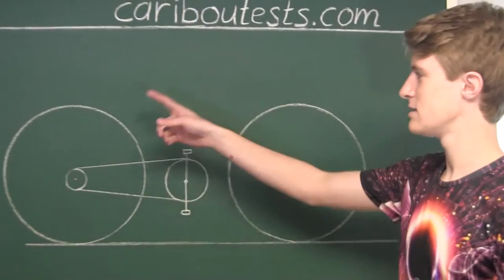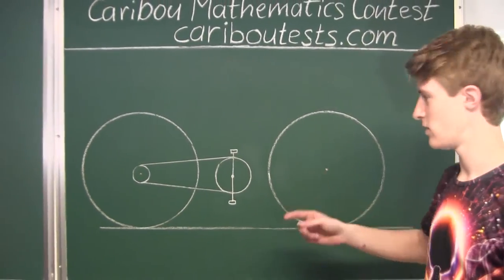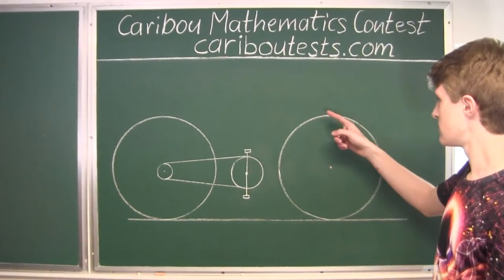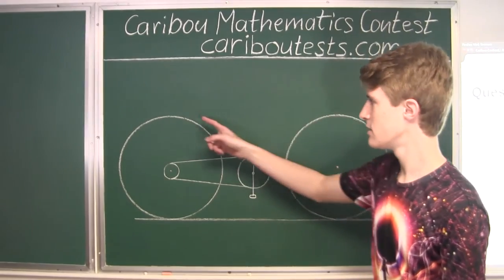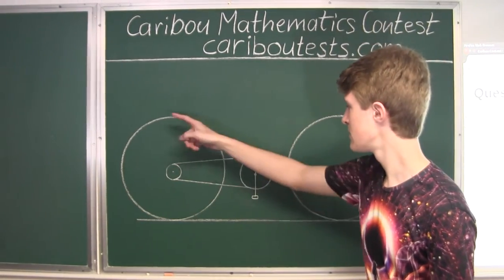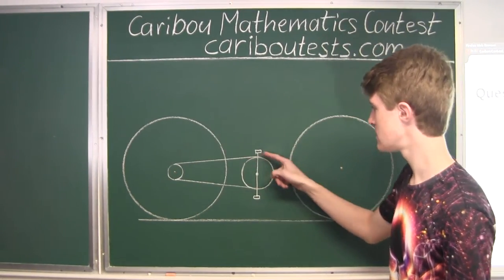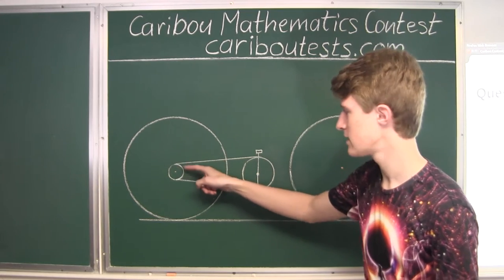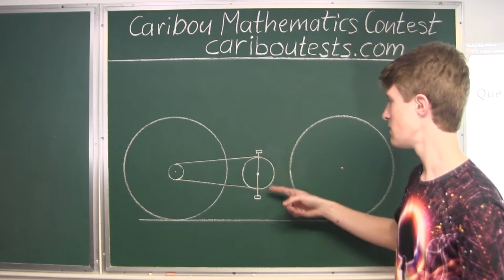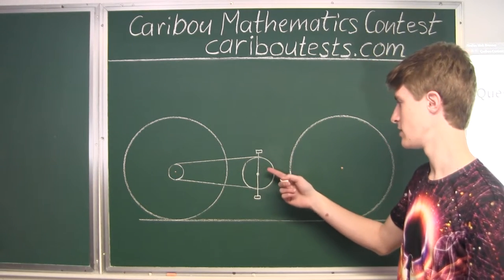This is a sketch of the bicycle, where this is the front wheel, the front tire, this is the back tire, and these are the front and back gear wheels, where the pedals are mounted on the front gear wheel.